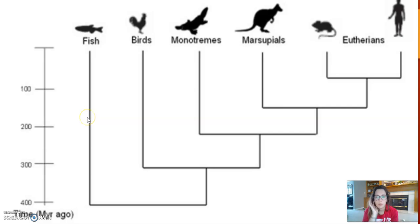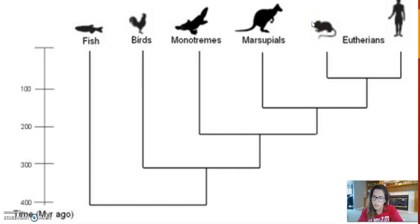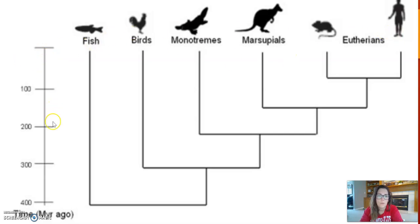Let's look at some actual examples — this is the phylogenetic tree on your activity. These are species: fish, birds, and then different types of mammals — monotremes like platypus, marsupials which are mammals that have pouches, and eutherians which are placental mammals like humans. This tree is similar to the one I just showed you, except it's turned vertically, so the top species are obviously still around today.